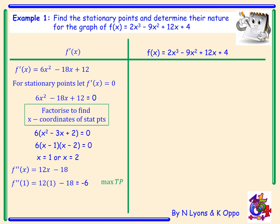We then put x equals 2 into our second derivative and get positive 6. Since we have a positive value, when x is 2 this is a minimum turning point.